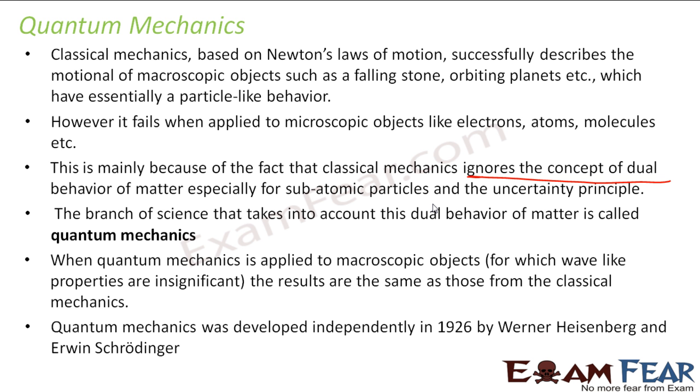Quantum mechanics was developed independently in 1926 by Heisenberg and Schrodinger. As I mentioned, de Broglie's hypothesis, Heisenberg's uncertainty principle and Schrodinger's equation. These three were the milestones for the quantum mechanics. They were the ones who started the concept of dual nature and this dual nature gave rise to this vast era of quantum mechanics.